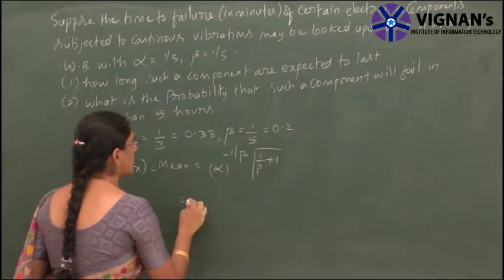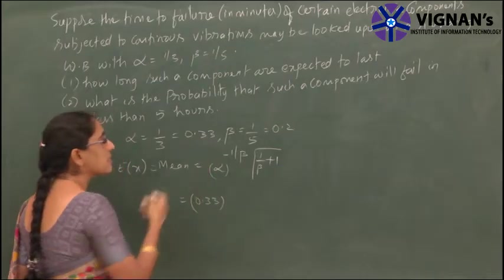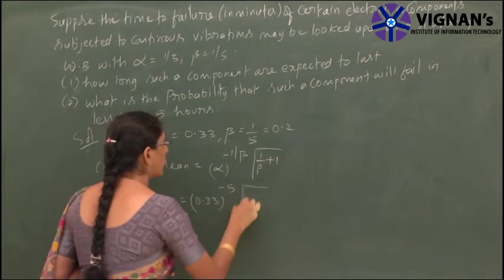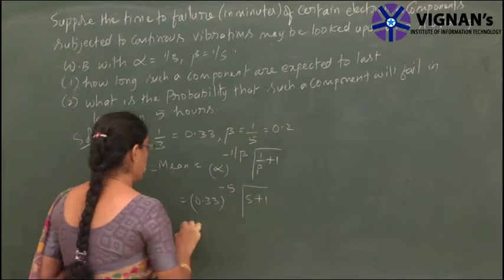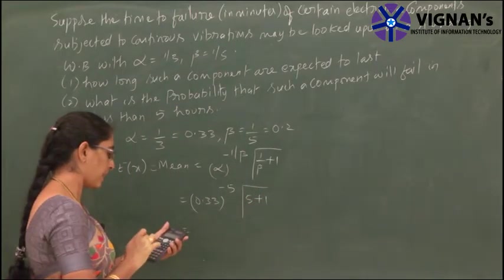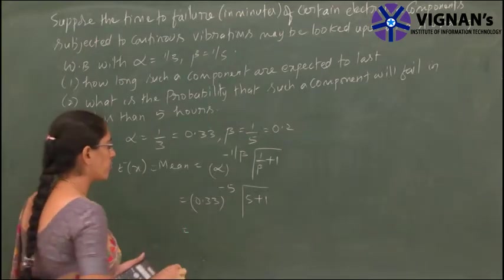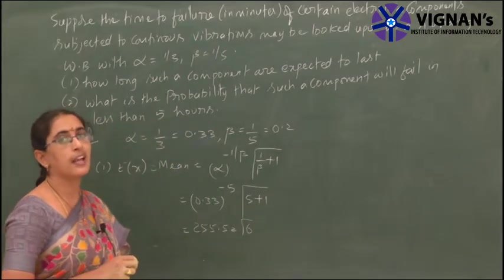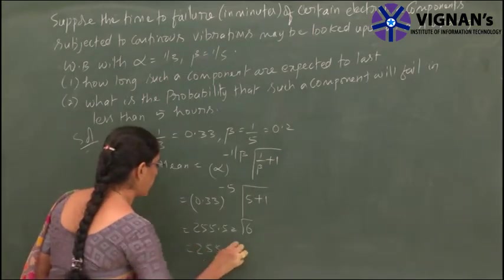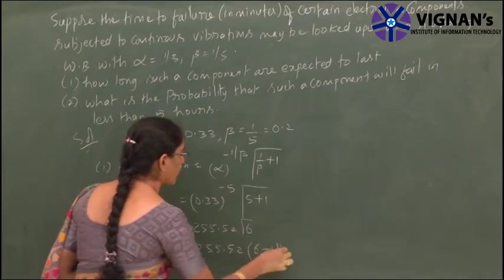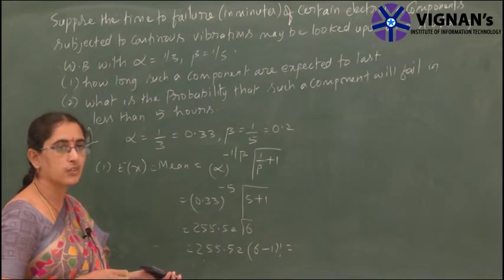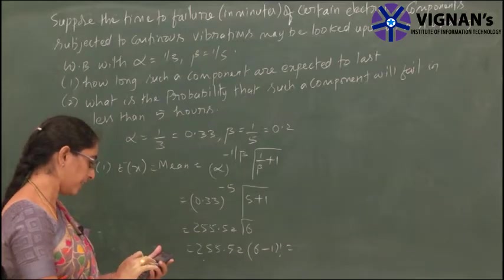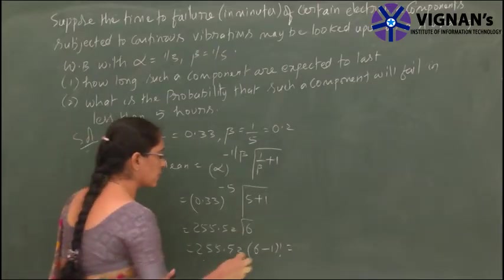Substituting: alpha = 0.33 raised to the power of minus 1/beta, where 1/beta = 1/0.2 = 5. So it is 0.33^(-5) times gamma(1/beta + 1) = gamma(5+1) = gamma(6). Now 0.33^(-5) equals 255.52. And gamma(6) = (6-1)! = 5! = 120. So 255.52 times 120 gives 30,662.78.